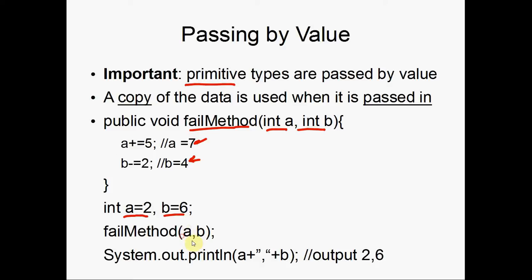a is passed in here to be 2, 6 is passed in here, a becomes 7, b becomes 4, but since only copies are passed in, when we print out a and b, 2 and 6 are printed out on the screen.